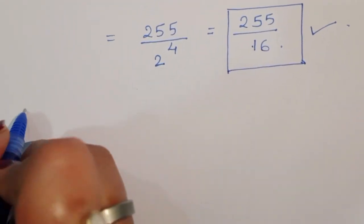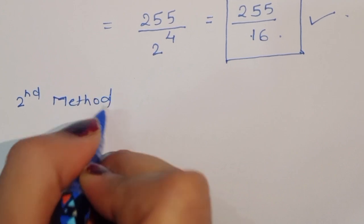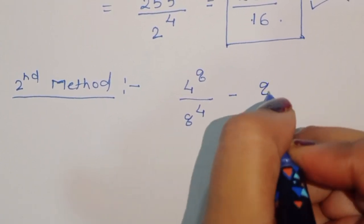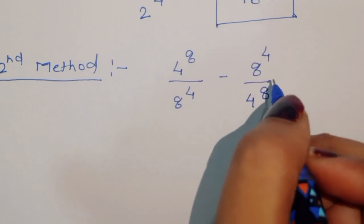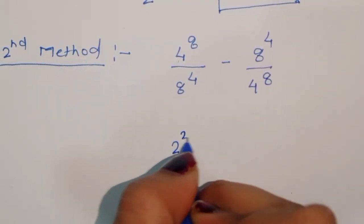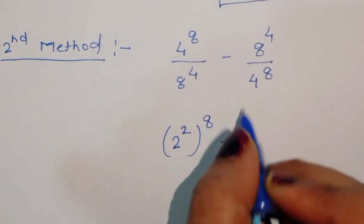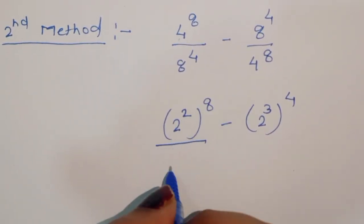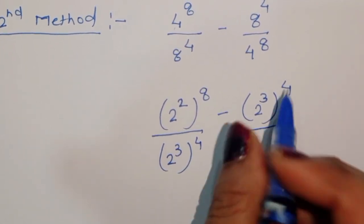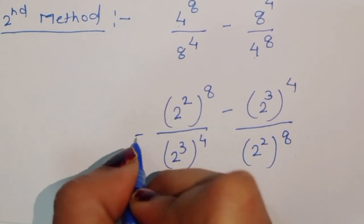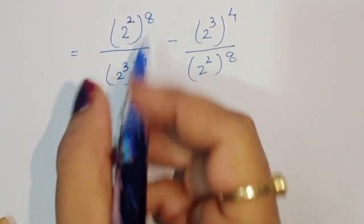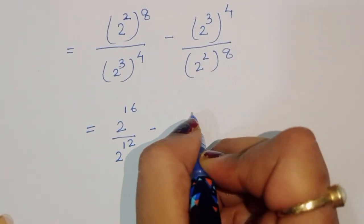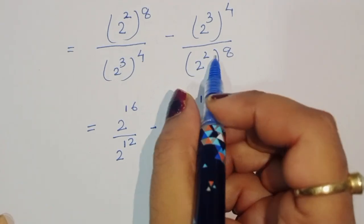Now using the second method: the question is 4 power 8 divided by 8 power 4, minus 8 power 4 divided by 4 power 8. We write 4 as 2 squared and 8 as 2 power 3. So 4 power 8 is 2 power 16, and 8 power 4 is 2 power 12. This gives 2 power 16 over 2 power 12, minus 2 power 12 over 2 power 16.